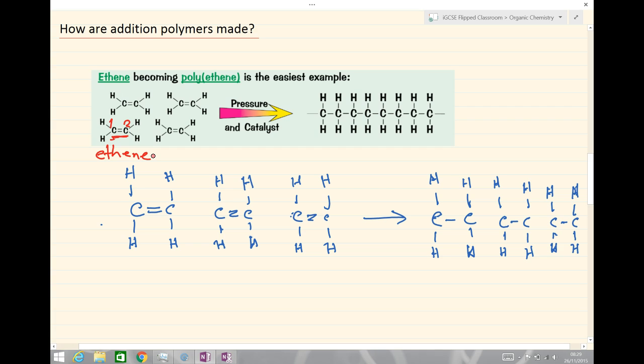And then under high pressure and using a catalyst to speed up the reaction, we make this long chain carbon. And you can see we had eight carbons to start with in eight carbons. Importantly, it's open at the end. And what that means is it would go on and on and on, making a very long repeat unit chain.